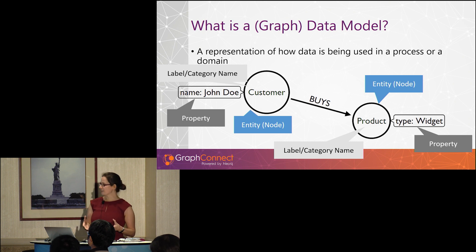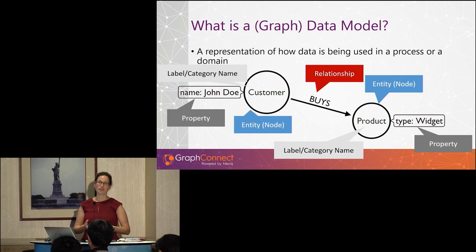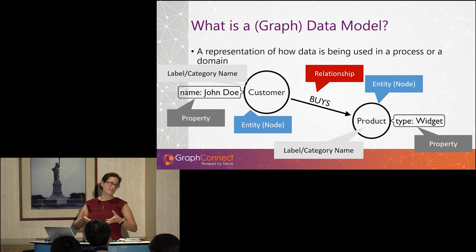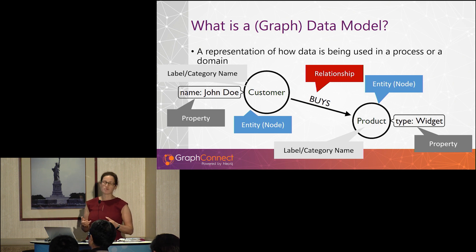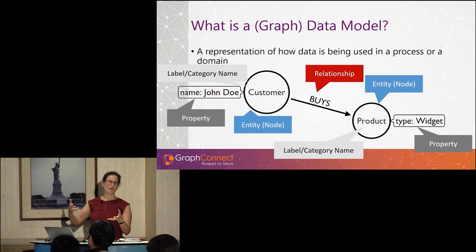Last but not least, we also want to describe how these entities are connected, and we call this a relationship. There is a type of relationship. So in this example, a business concept — an entity of Customer buys a business entity or concept of Product.